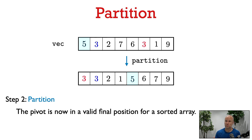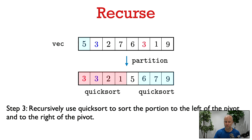After the partition step, the pivot element — in this case the five — is in a valid final position for the whole vector to be sorted. The remaining problem is to sort the portion of the vector to the left of the pivot and to sort the portion to the right, which we do recursively by calling QuickSort on each side.